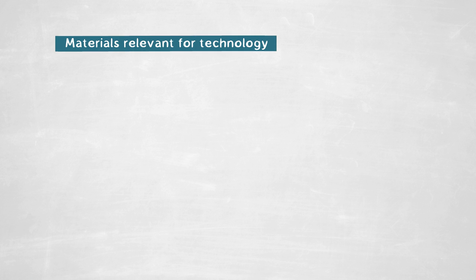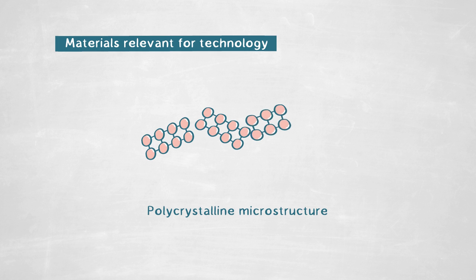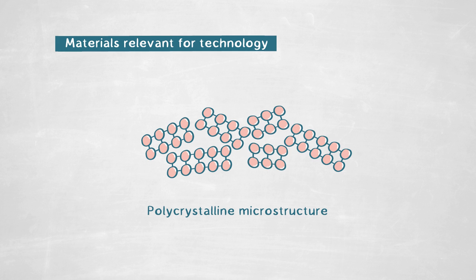Technologically relevant materials are typically composed of a polycrystalline microstructure. That means different crystals build up the material and these crystals are somehow differently oriented to each other. These different crystals are separated by very confined interfaces,